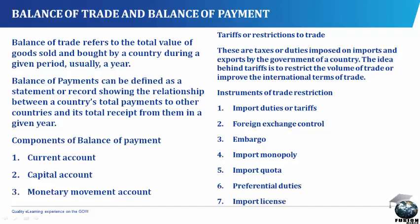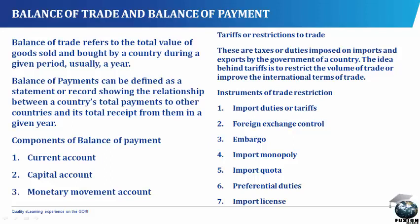We have the favorable balance of payments and the unfavorable balance of payments. Favorable balance of payments occurs when receipts from invisible and visible export trade is greater than payment to other countries on invisible and visible import trade. A credit balance can be used to increase investment abroad or to add to a country's gold reserve.